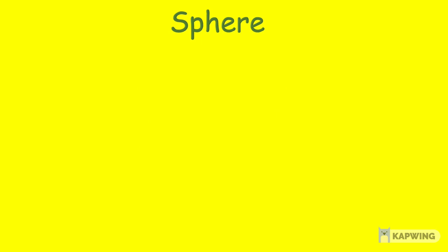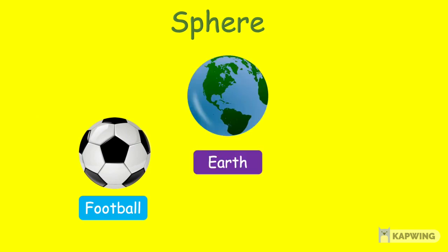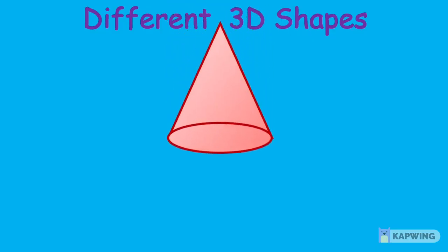There are spheres all around us. For example, a football is the shape of a sphere. Our planet Earth where we live is also the shape of a sphere. And an orange fruit that we eat is also a good example of a sphere.